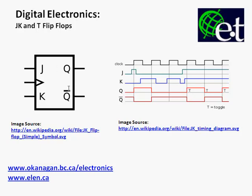We see a JK flip-flop here and a timing diagram for it. There's the clock signal, there's my J and K values, and here's my output. You can see that the output only changes on the rising edge of the clock. It didn't change at one point because we were in a state where we didn't need to change. But everywhere else, at the rising edge of the clock, something happens.